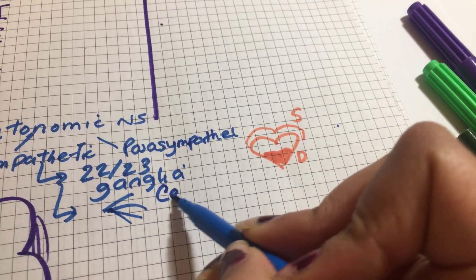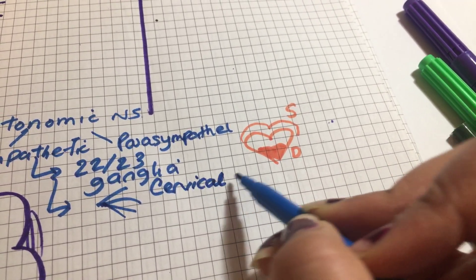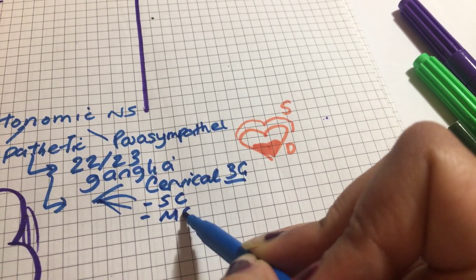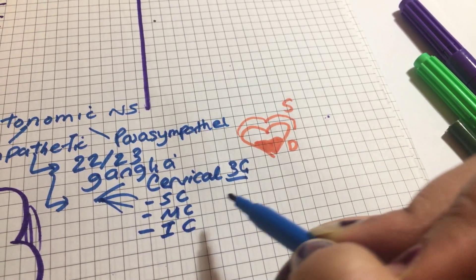Now, in terms of the cervical region, we have three ganglia. We have superior cervical, middle cervical, inferior cervical.